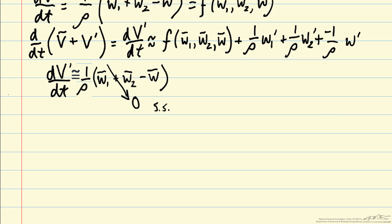So then we're left with 1 over rho times w1 prime plus w2 prime minus w prime.